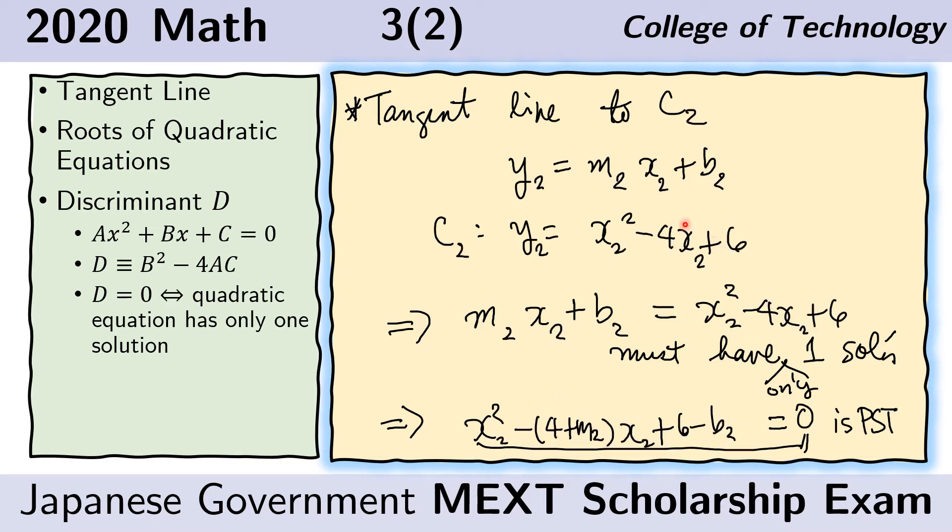We follow the same steps to obtain the tangent line to C sub 2. Here we have the general equation of a line where m is the slope and b is the y-intercept. The subscript 2 is used to indicate that this line is tangent to C sub 2. C sub 2 is given by this equation. Again, because this is a tangent line, then this tangent line and C sub 2 would have a single point of intersection.